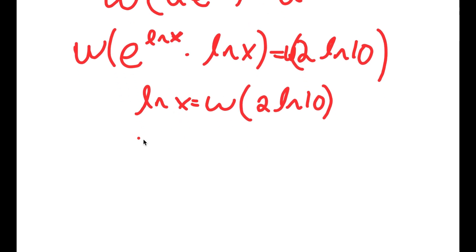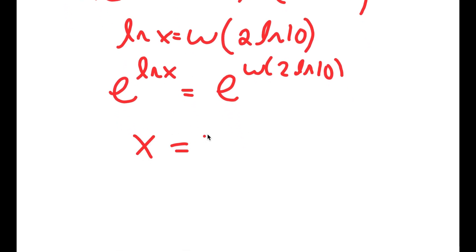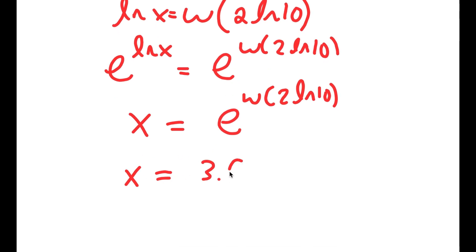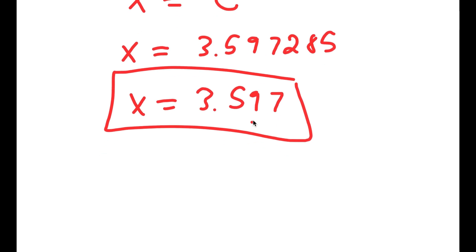Now if I take e to the power of ln x, that equals e to the power of W of 2 ln 10. And e to the power of ln x equals x. So I get x is equal to e to the power of W of 2 times ln 10, which equals approximately 3.597285, which rounds to 3.597. So this is my answer to this problem.